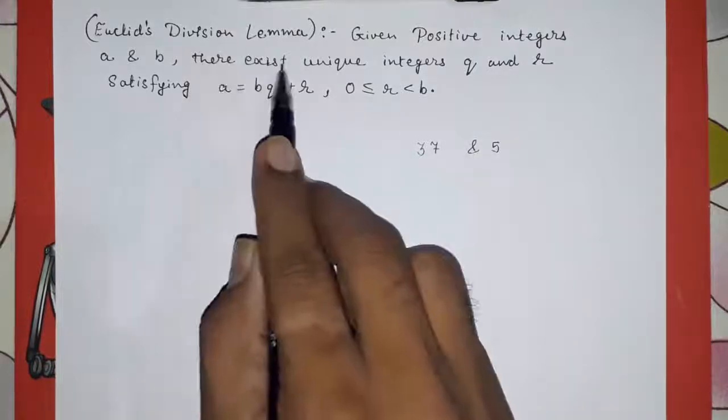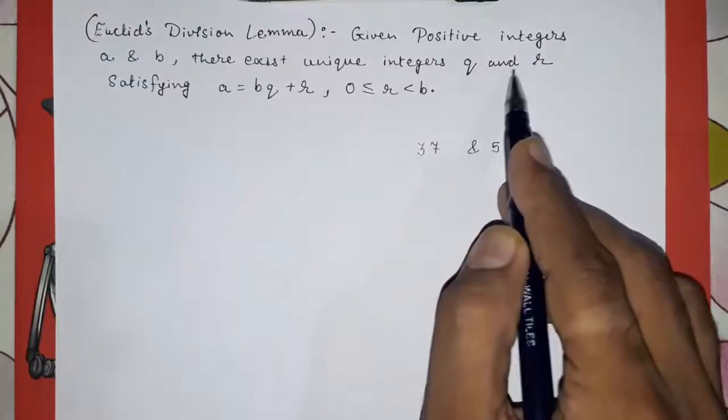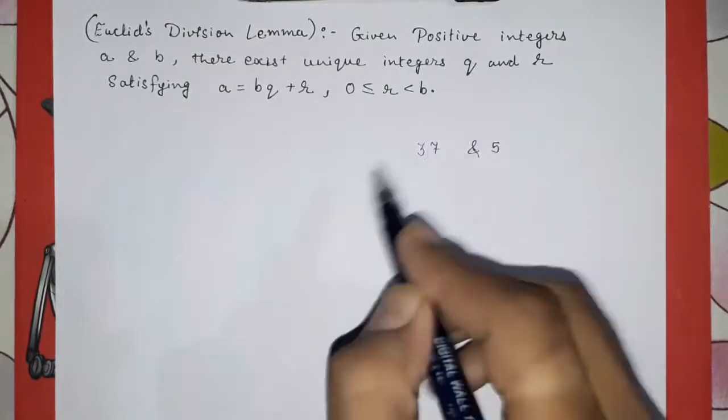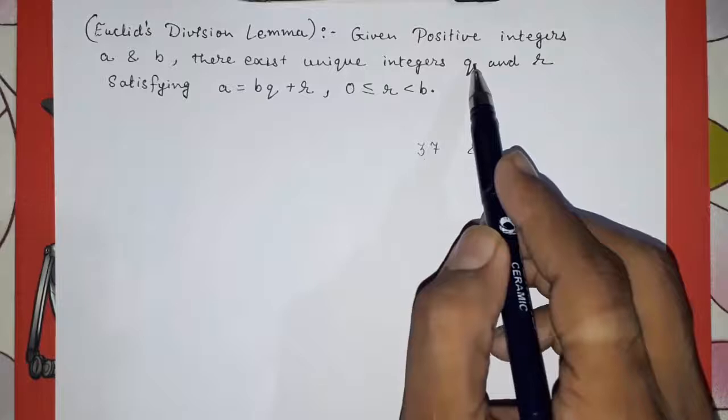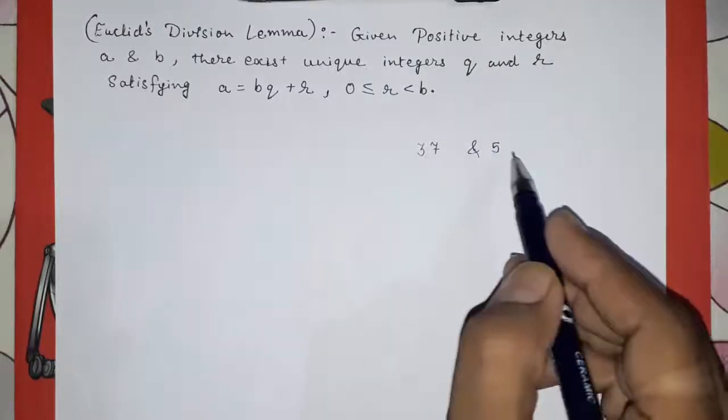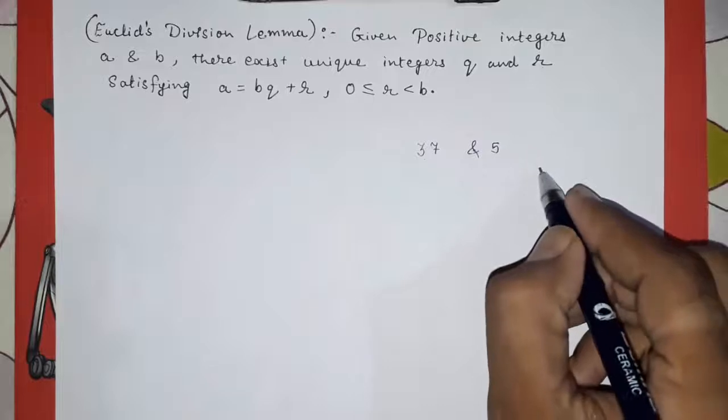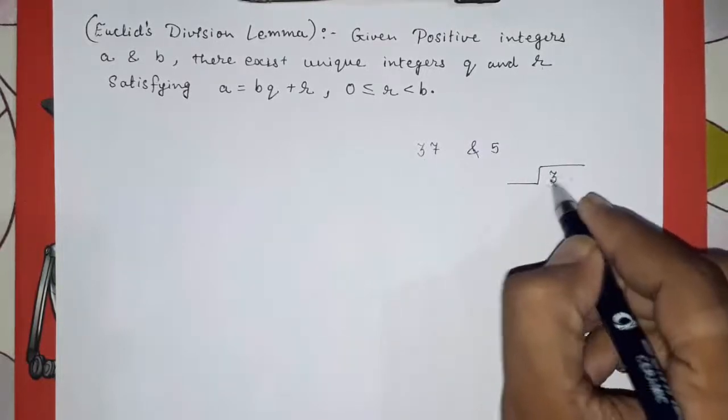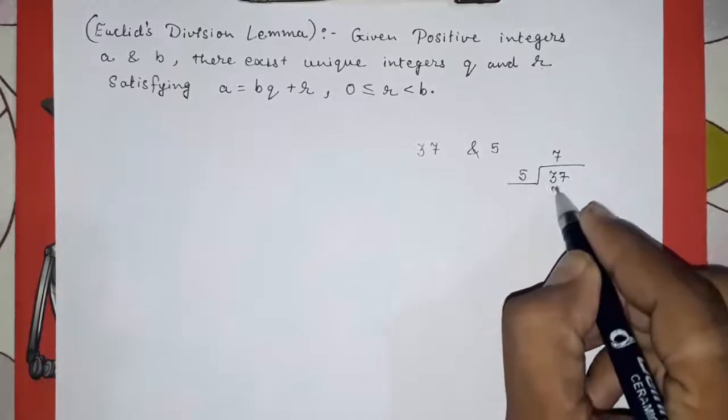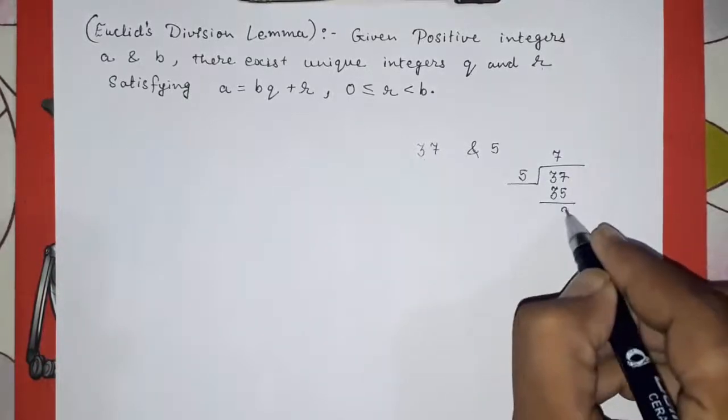They said there exist unique integers q and r. From these two we are getting two other integers and the name of those integers will be q and r. How we will get them? If we divide these two, look here I am dividing it. 37 and 5, 5 times 7 is 35, and our remainder will be 2.